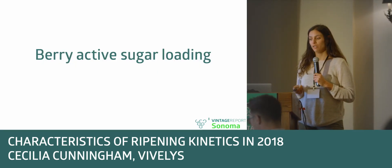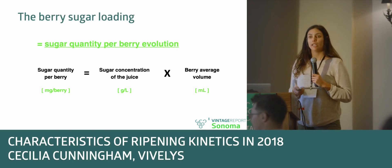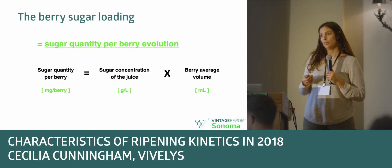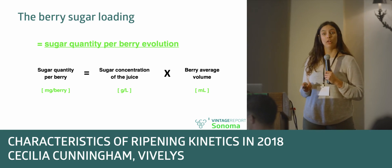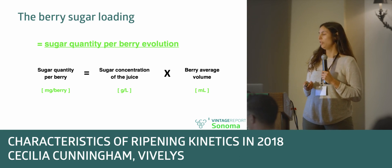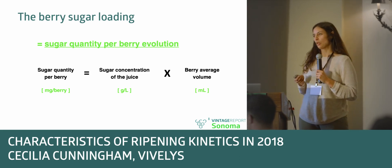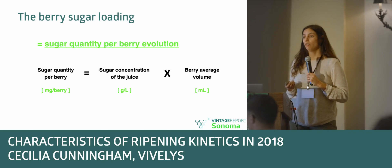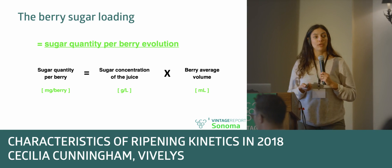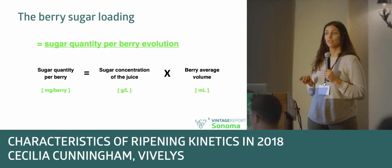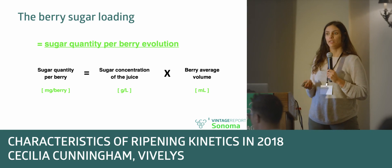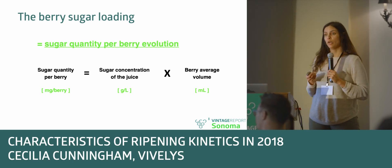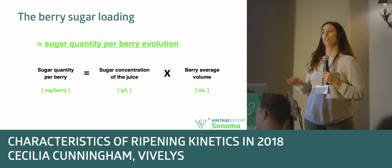A quick reminder on what the berry active sugar load is — it's basically the evolution in time of the amount of sugar that we have in the berries. For this we have a specific tool called Diastem, and it measures the volume of a representative sample we take from the vineyards. Crossing this value of volume with the Brix, or sugar concentration in grams per liter, we get the exact amount of sugar per berry. This is a physiological parameter that gives us a lot of information about the balance of the plants and the overall march of the harvest.